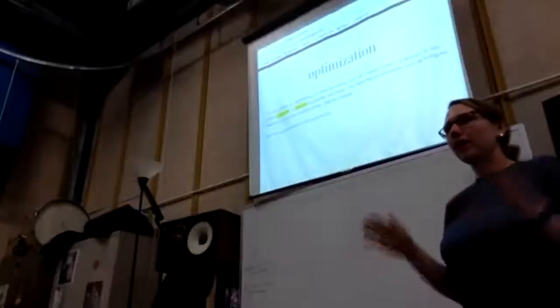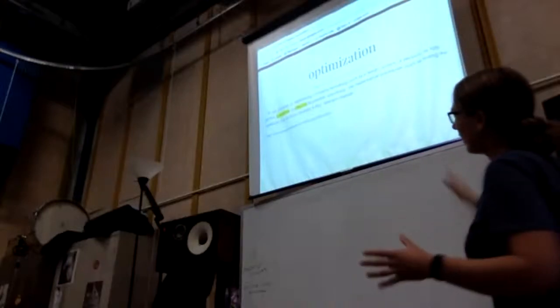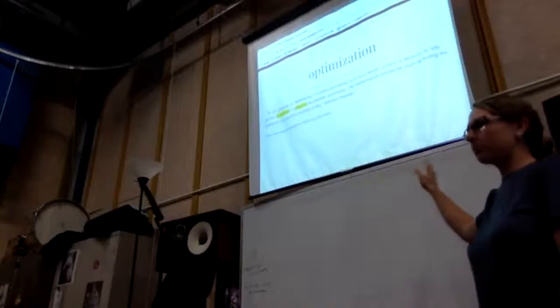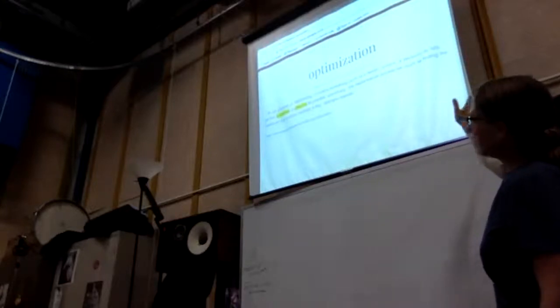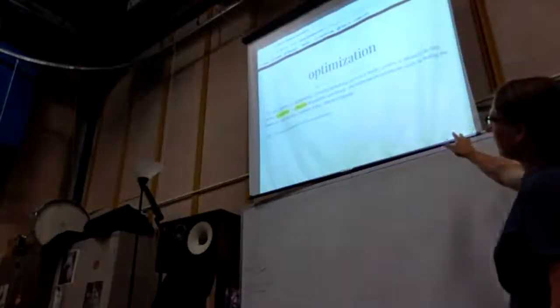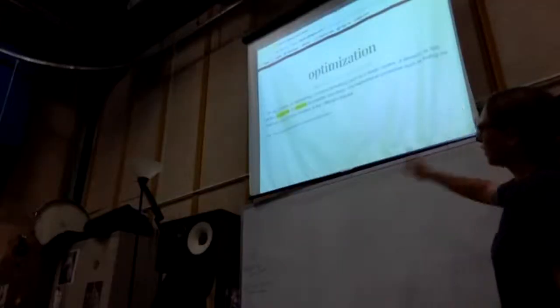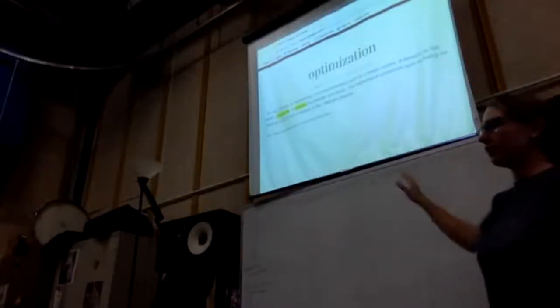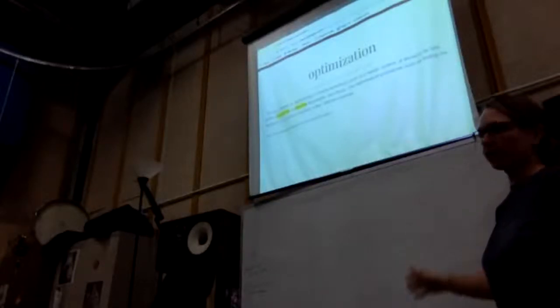Starting with the definition: optimization is a noun meaning an act, process, or methodology of making something such as a design, system, or decision as fully perfect, functional, and effective as possible. She highlights the words 'functional' and 'effective' — if you make those two things happen, you've done the job correctly.